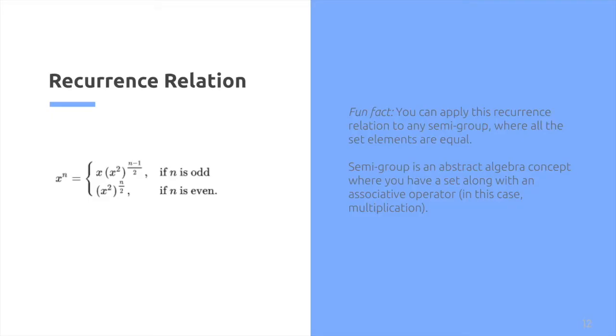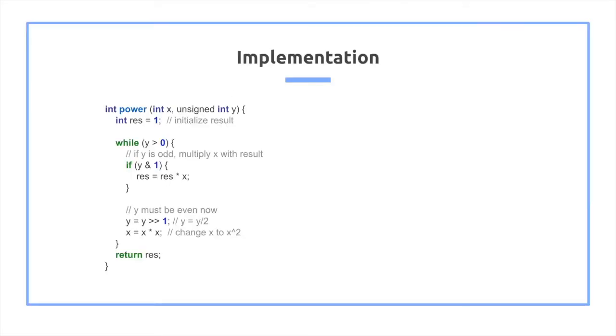The implementation is extremely straightforward. All you do is initialize the result to r equals 1. While the exponent is greater than 0, we check to see if it's odd. If it's odd, then we take the result and multiply it by x.